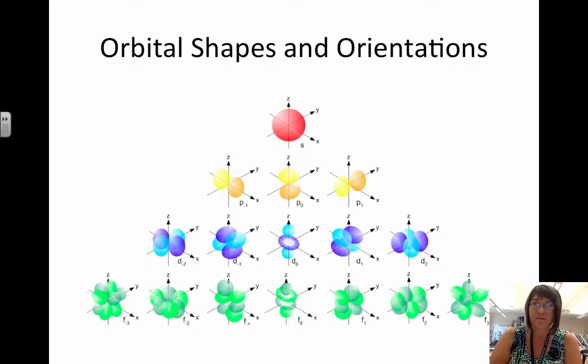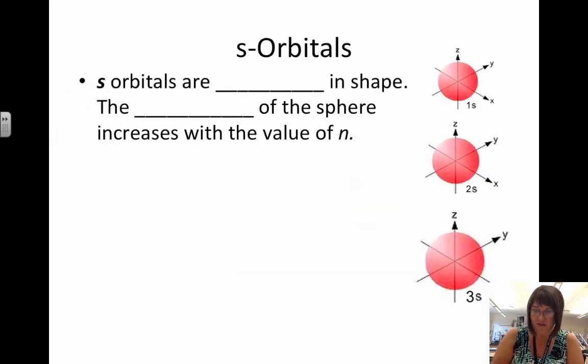We'll start with the simplest. S orbitals have a spherical shape, and the radius of the sphere, the size of the sphere, increases as the energy level increases, where n is energy level.